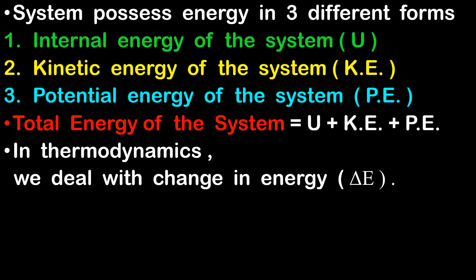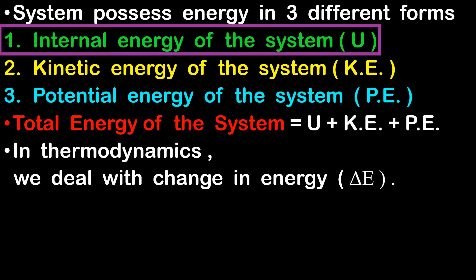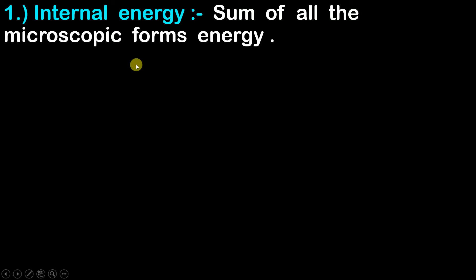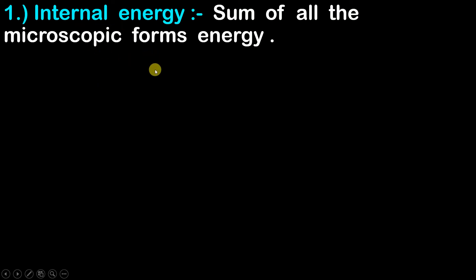Now let us understand all three different forms of energy one by one. First, let us understand what is internal energy of the system. In simple words, internal energy is nothing but the sum of all the microscopic forms of energy. When you add all the microscopic forms of energy present in the system, you get the internal energy of the system.